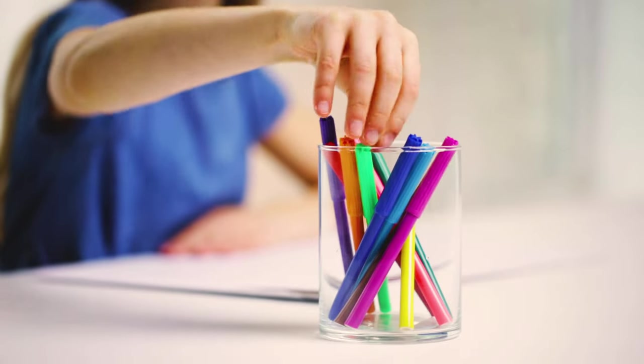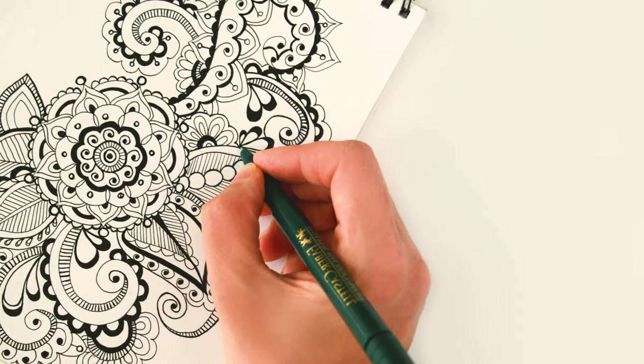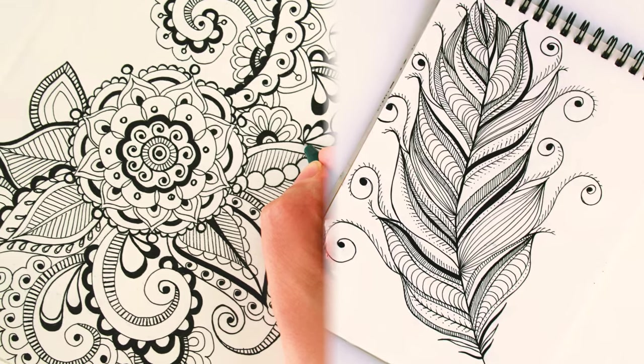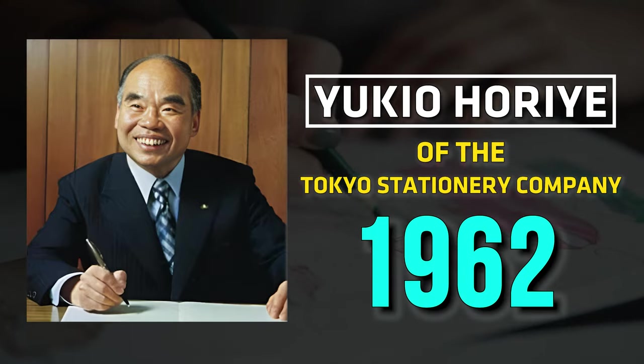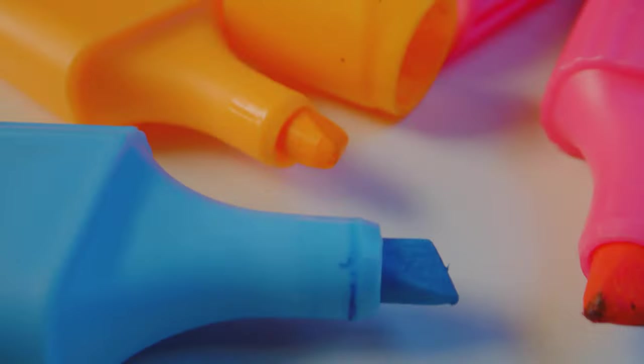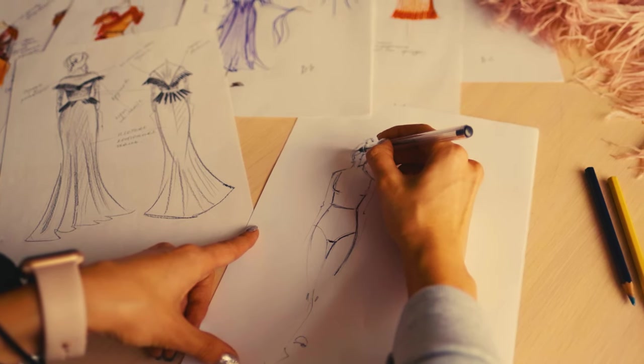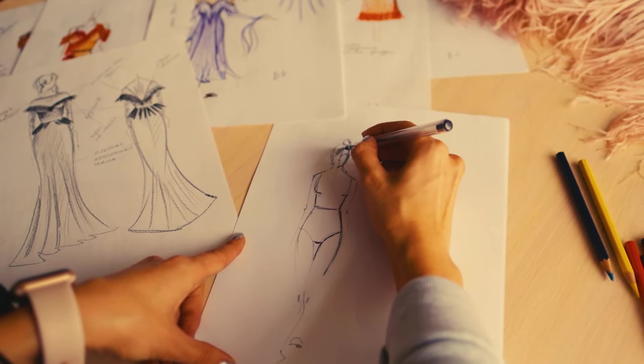The 1960s brought the felt tip pen, offering new ways to express ourselves through illustrations and designs, further expanding the creative possibilities of writing instruments. Invented by Yukio Horie of the Tokyo Stationery Company, the felt tip pen used a porous tip made of compressed fibers to release ink, creating a smooth writing experience. With various tip sizes and a wide range of colors, artists and designers embraced this versatile tool, leading to some truly memorable 60s-era artwork.